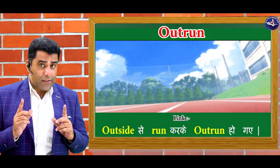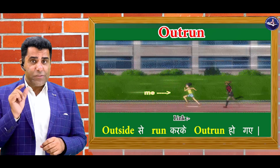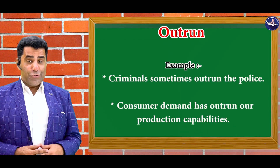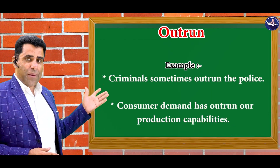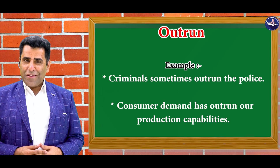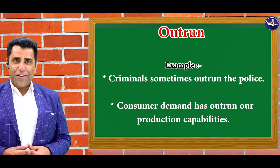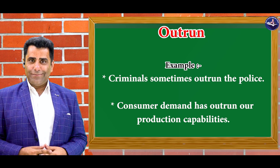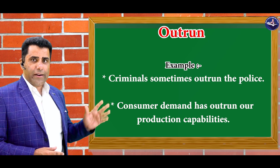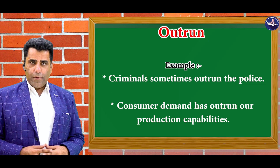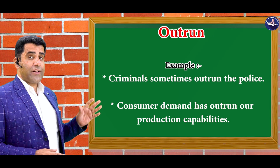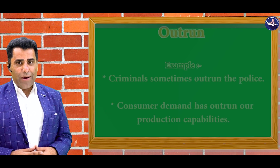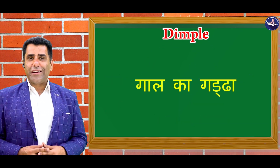Guys, yeh dekhna zaroori hai ki is particular word ko sentence mein kaise use kiya jata hai. So let's see. Criminals sometimes outrun the police — kabhi kabhi criminals bhi police se aagye nikal jate hai. Consumer demand has outrun our production capabilities. Toh yeh tha humara word outrun.